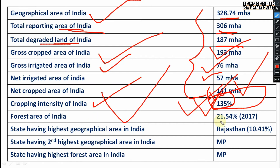The forest area of India is 21.54 percent as of 2017. The state having the highest geographical area in India is Rajasthan at 10.41 percent, and the state having the second highest geographical area is Madhya Pradesh.